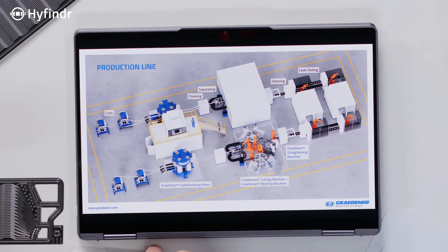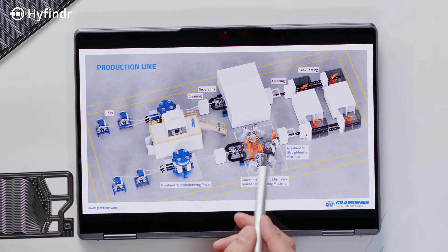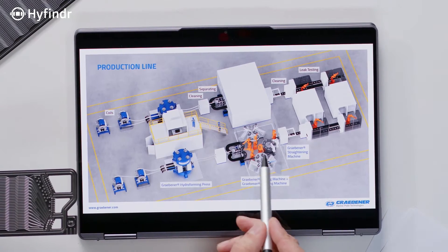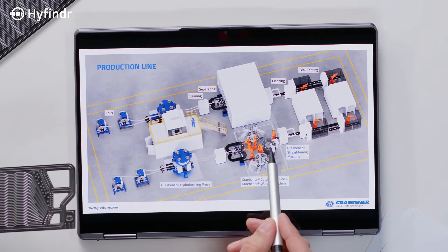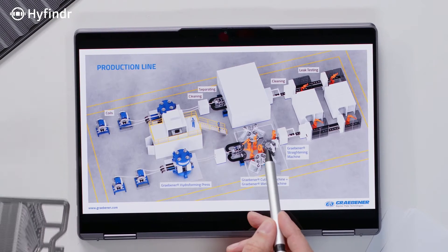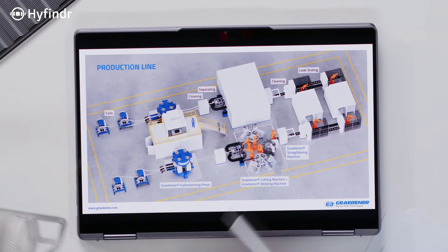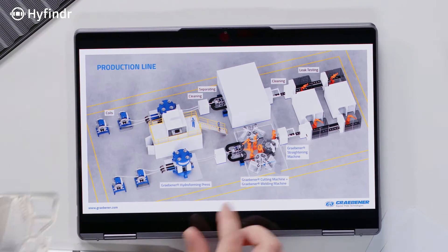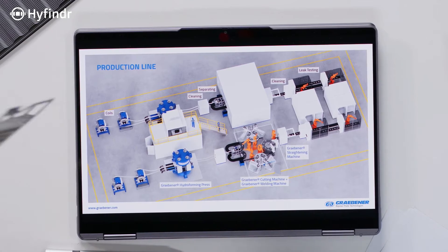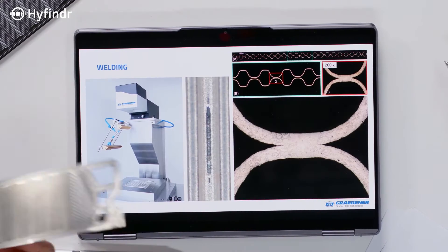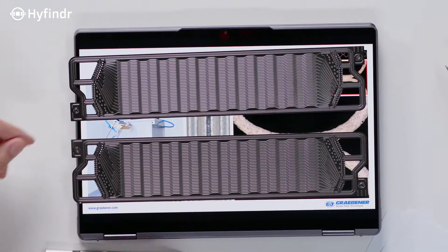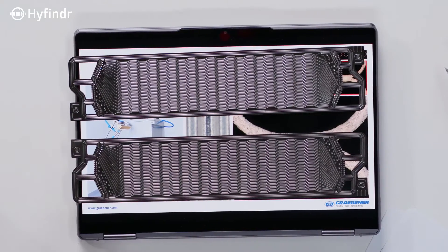So the next step: as you can see here, this was the cutting station, and then we go into the welding station. The welding station means you need to have two plates, because you need something to weld. So for example, you have here two plates — the anode and the cathode plate.